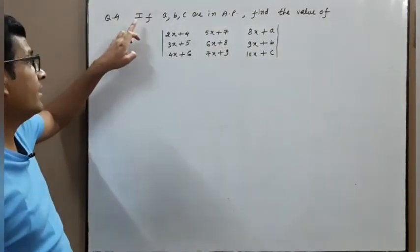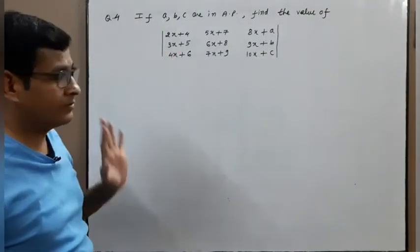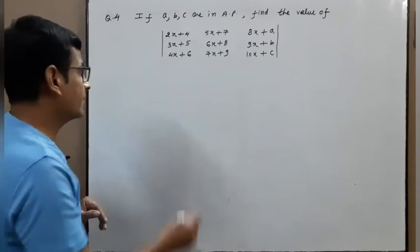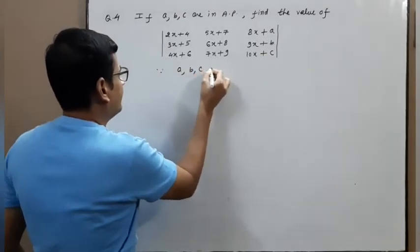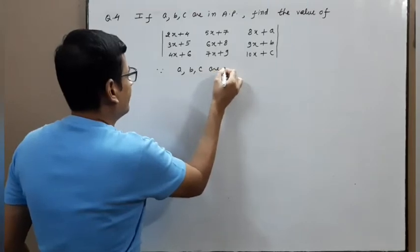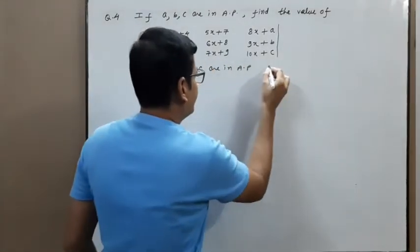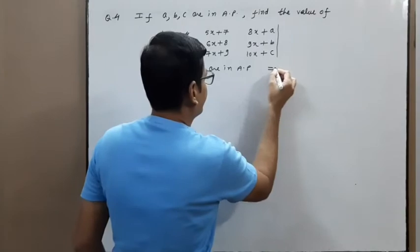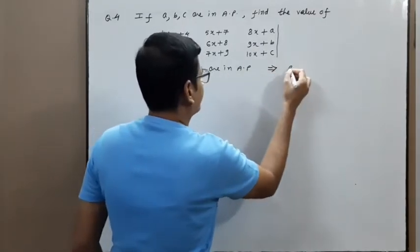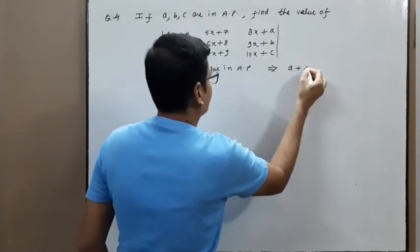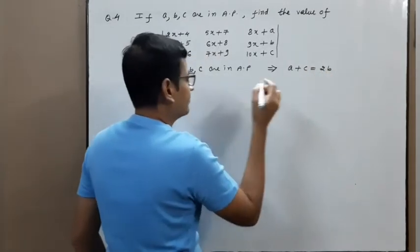Next problem: if a, b, c are in AP, find the value of the given determinant. Since a, b, c are in AP, the sum of the first and last term equals twice the middle term: a + c = 2b.